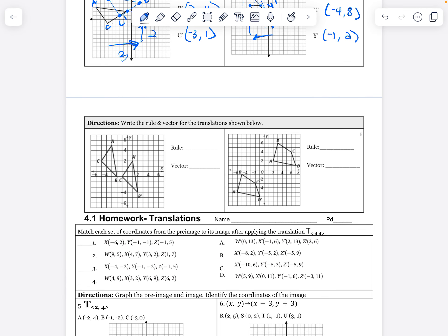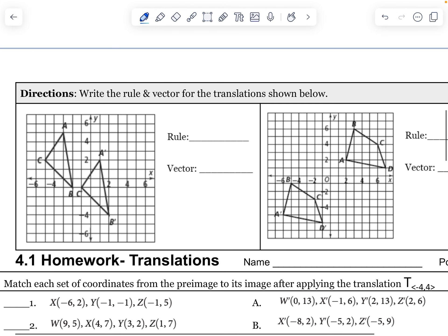Write the rule and the vector for these shown below. So this one's my first one. This one's my second one. So what happened here? The rule is going to be x plus or minus, y plus or minus. So over 1, 2, 3, 4. Down 1, 2, 3. Down 3. So x plus 4, y minus 3 is my rule. And then my vector is going to be to translate 4, negative 3. Marvelous.